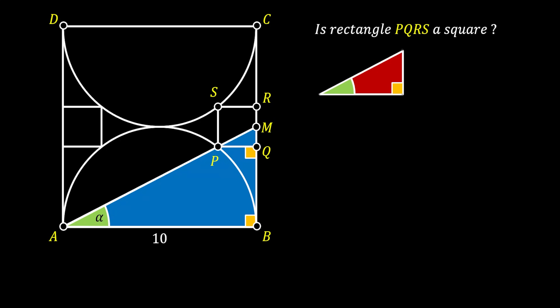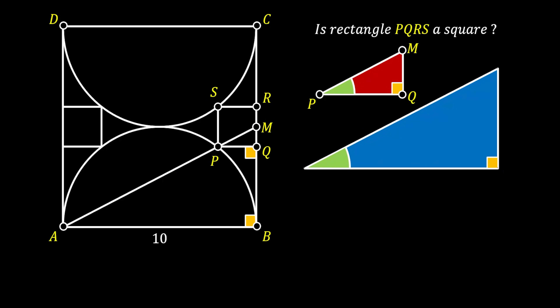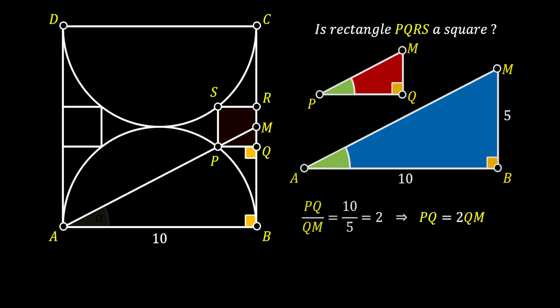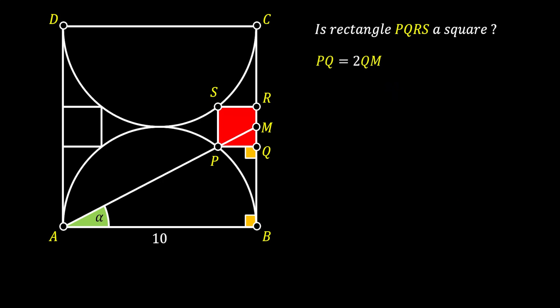So we can isolate those two triangles. Next, we know that the line AB is equal to 10. And we also know that the line BM is actually the half of the side of the square, which equals to 5, since M represents the midpoint of the side of the square. Now, we can use the rule of similarity, and we can say that the relation between the legs of those two triangles must be identical. So PQ over QM must be equal to 2, which means that PQ is equal to 2 times the value of side QM.